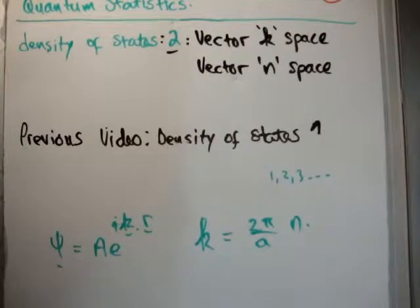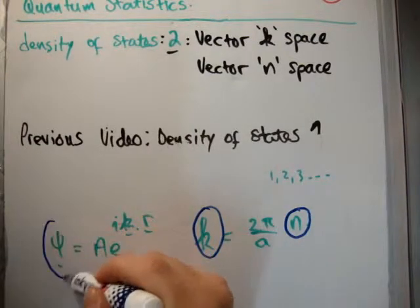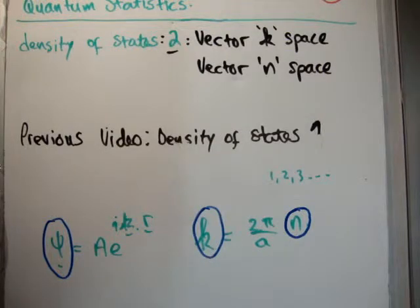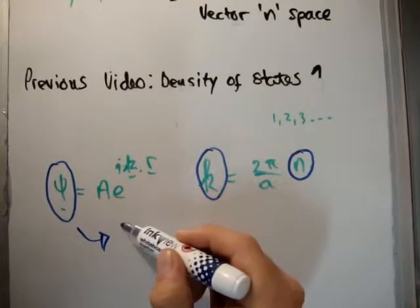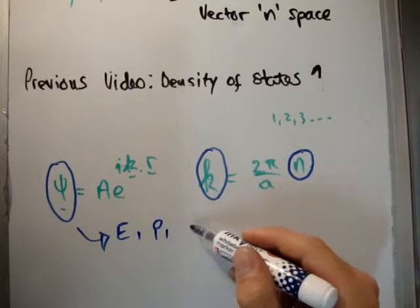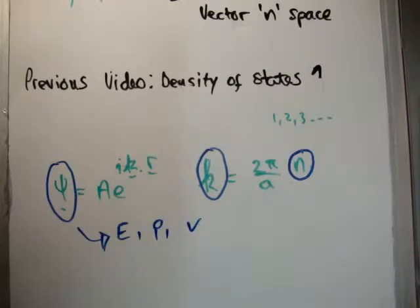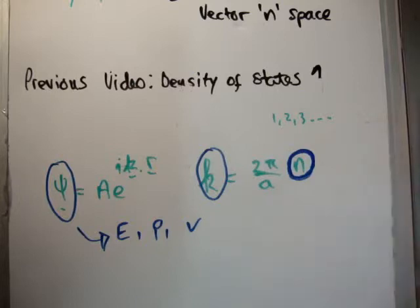Similarly, instead of looking at k, why would we look at k when we could look at n, which is simply just a number? The point here is that by looking at the allowed values of n, we're able to work out the allowed values of k. By working out the allowed values of k, we're able to work out the allowed values of the wave function. Why is that interesting? Well, the wave function gives us the energy. If we know the allowed values of the wave function, we know the allowed values of energy, the allowed values of momentum, the allowed values of velocity — we know everything. So the whole point is, instead of looking at the wave function, we look at this quantum number n.